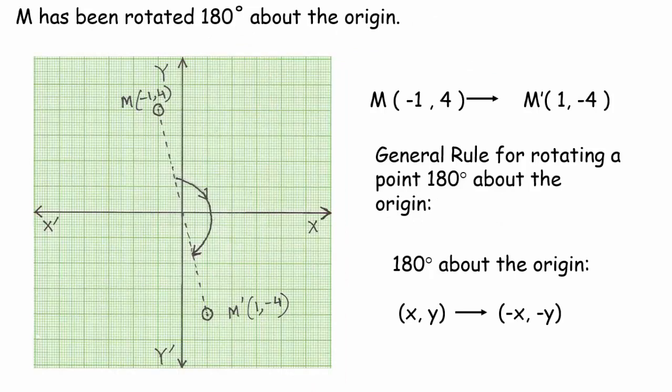Now we're going to look at the rule. We already realized where it should be located, thinking about the 180 degree angle. But now let's think about how we can take a point — point M here at negative 1, 4 — and create point M prime after that 180 degree rotation. This is how I think about 180 degree rotations: I think about kids in school. At the beginning of 8th grade, a lot of times kids are kind of immature, still growing up. But by the end of the year, they've made a 180 degree change. What does that mean? It means completely opposite.